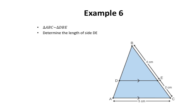Since these two triangles are similar, that means corresponding angles are equal and the ratio of corresponding sides are equal. Let's begin by identifying the corresponding angles. It might be a little bit difficult to see, but there are two triangles located in this figure — a smaller one and a bigger one. They both share the same angle B. Angle D is likely equal to angle A, and angle E is likely equal to angle C.